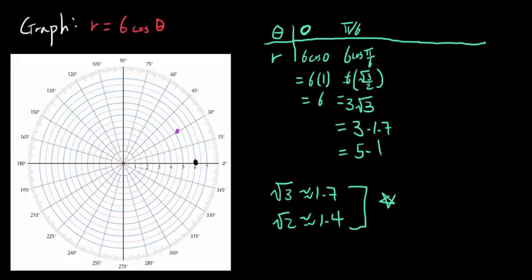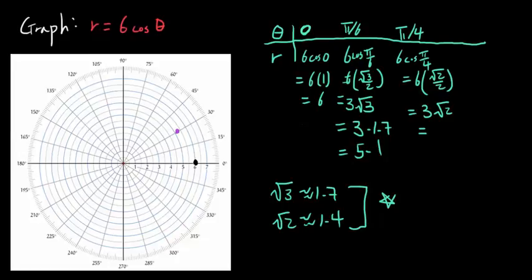Let's try pi over 4, or 45 degrees. Then r is going to be 6 times cosine of pi over 4, which is 6 times square root of 2 over 2, or 3 times square root of 2. Square root of 2 is about 1.4, so 3 times 1.4 is about 4.2. So when theta is 45 degrees, you're going to go about 4.2.